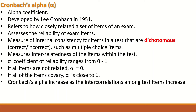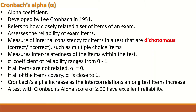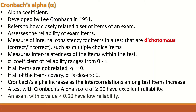Cronbach's alpha increases as the intercorrelation among test items increases. A test with a Cronbach's alpha score of 0.9 or greater has excellent reliability, and a test with an alpha value less than 0.5 will have low reliability.